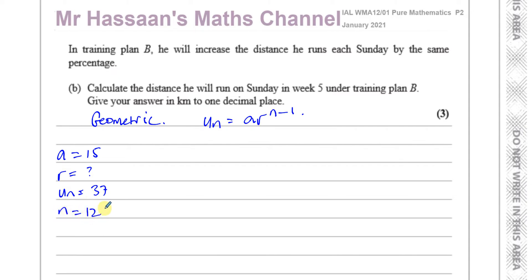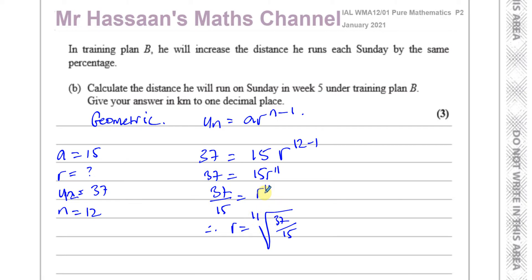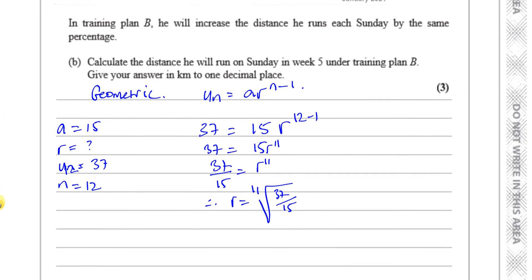So we can say 37 = 15 × R^(12 − 1), giving 37 = 15R^11. Therefore 37/15 = R^11, so R = the 11th root of 37/15. I'm going to leave it in this form because it gives a large decimal, and I'll use it to work out what the 5th term is.